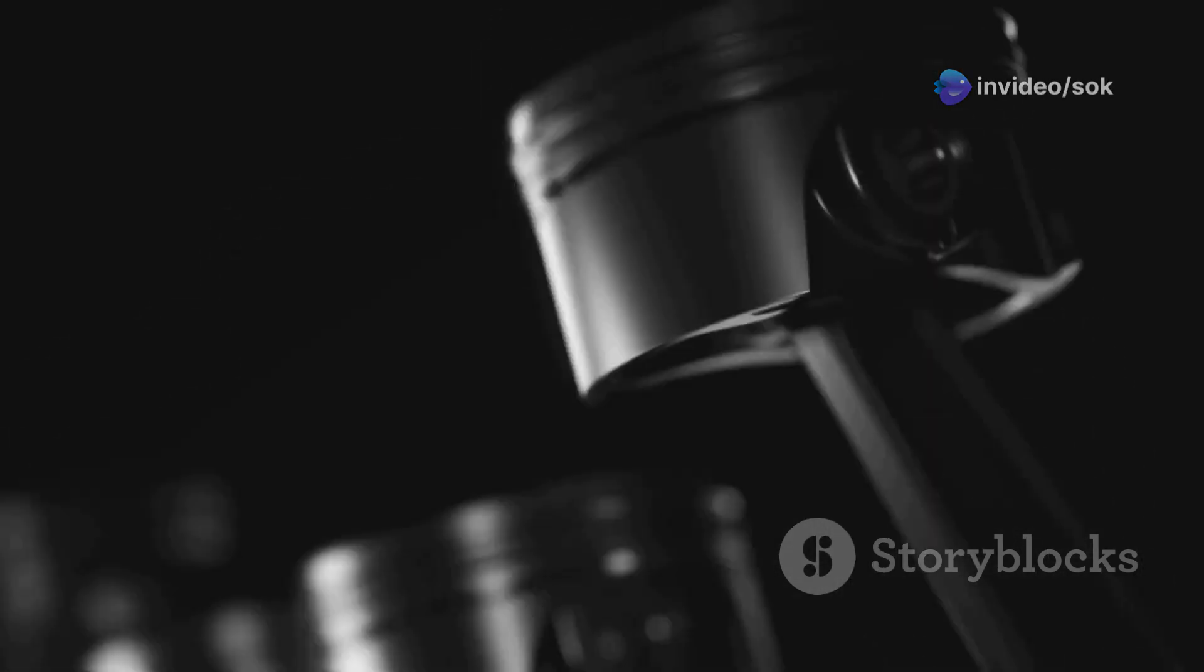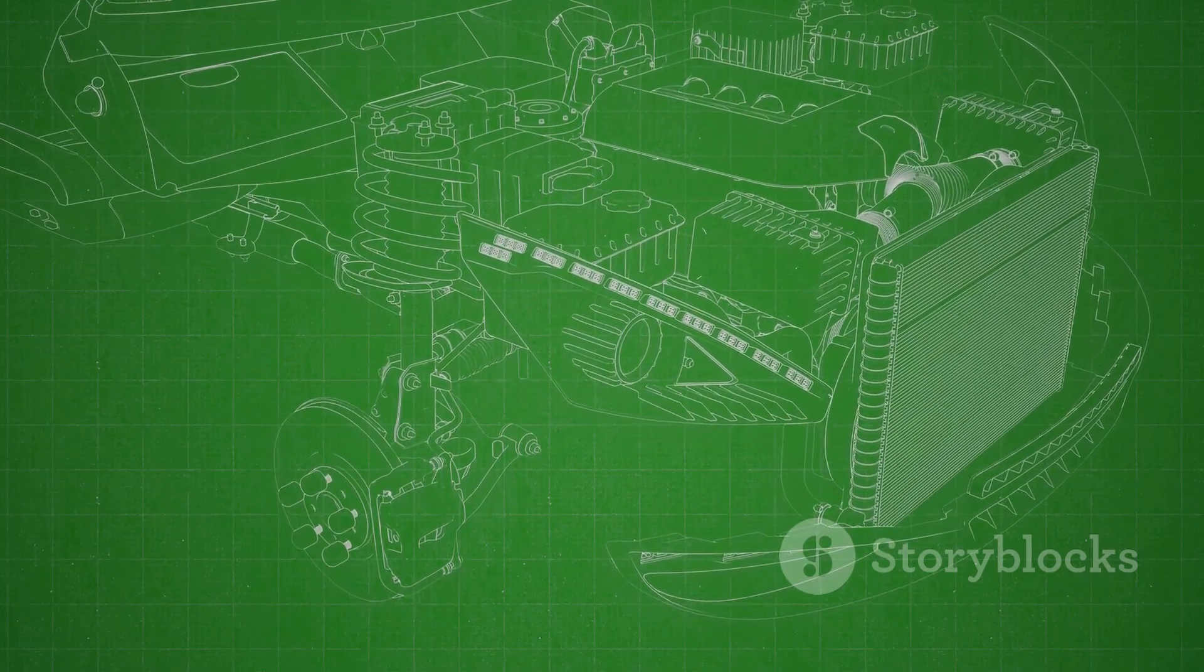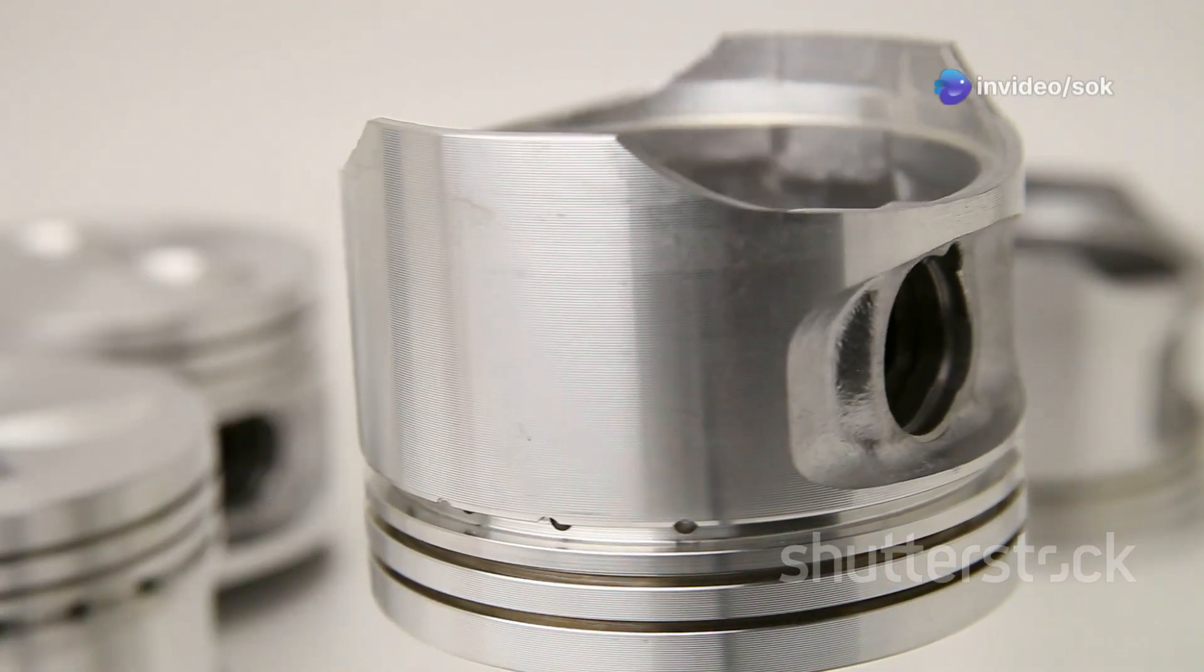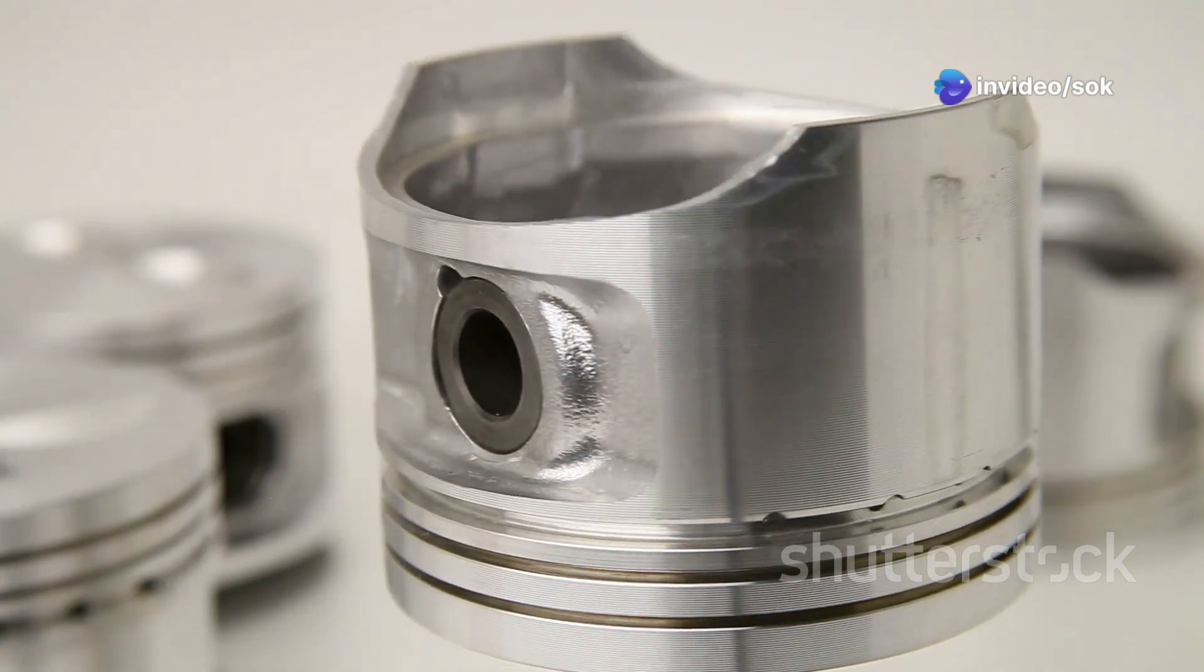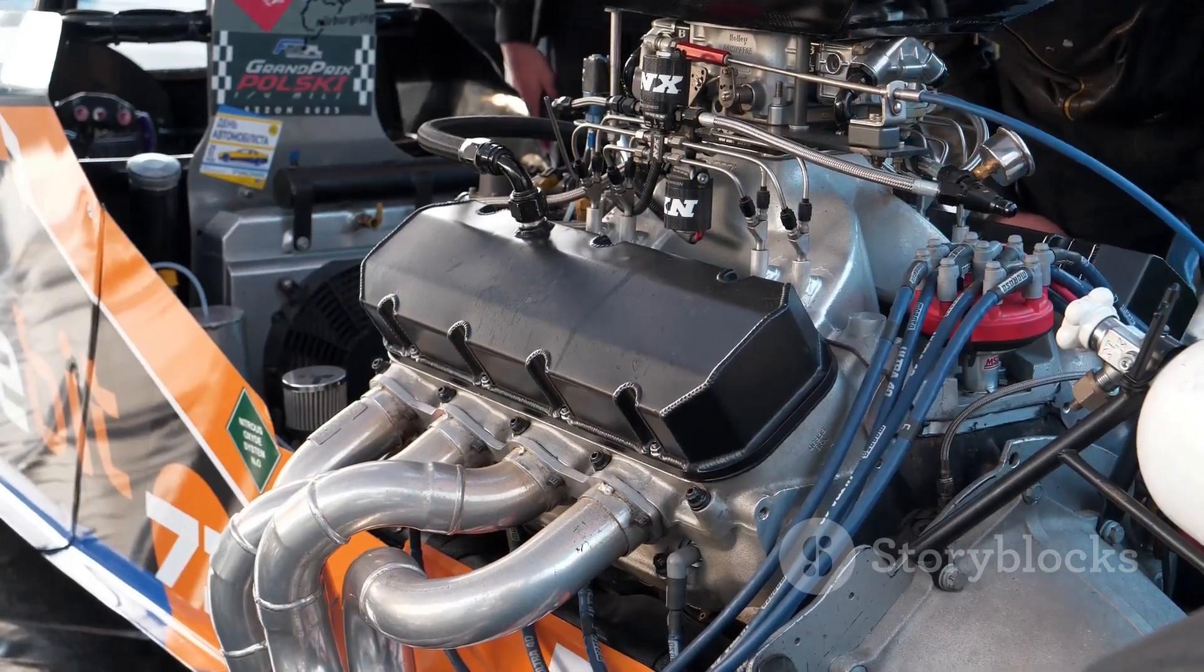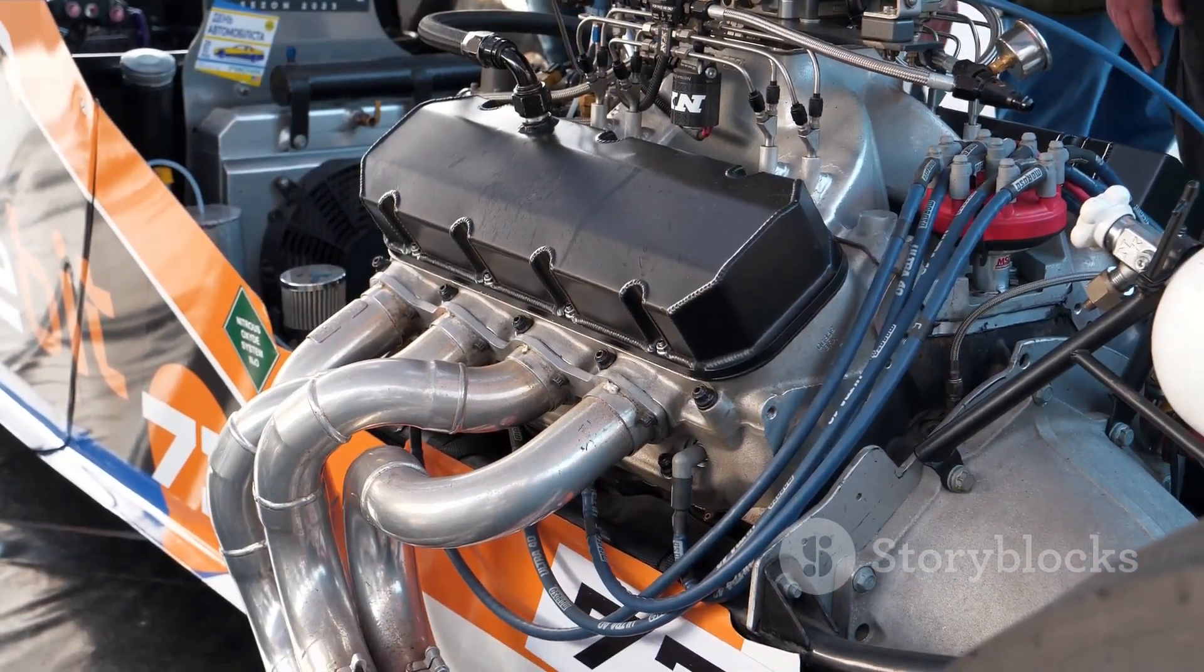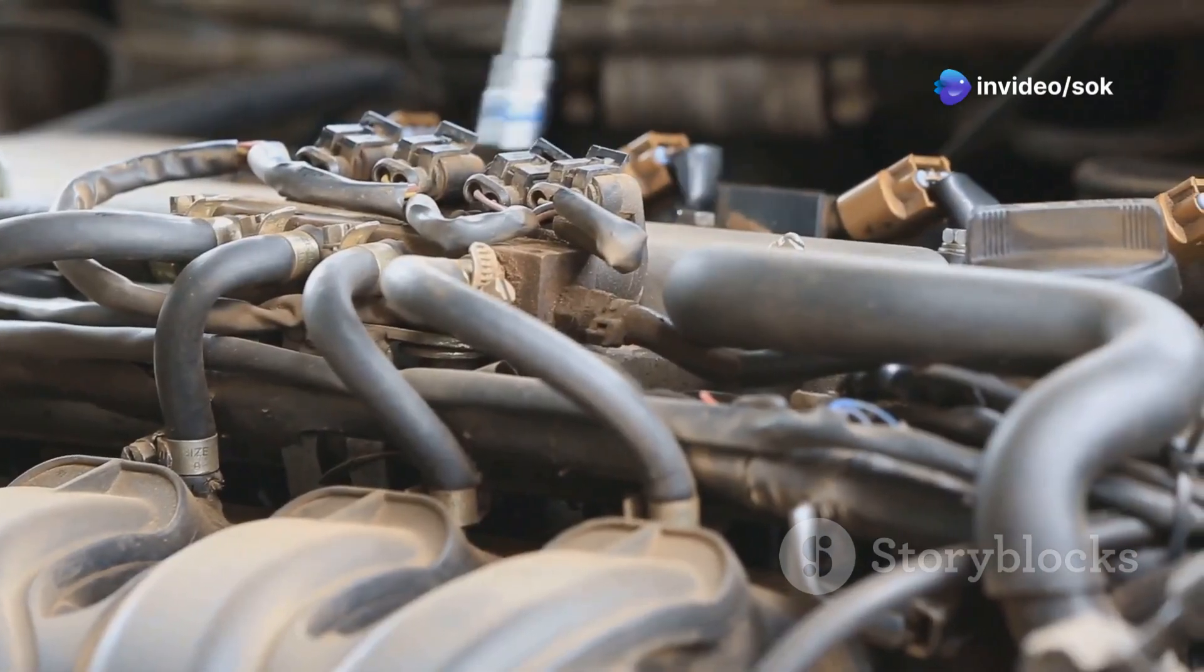Next, the cylinder. This chamber provides the space for the compression to occur. It's the arena where the magic happens. The smoother and more tightly sealed the cylinder walls, the better the compression. This ensures maximum efficiency and power output. Lastly, the valves. During the compression stroke, the intake and exhaust valves remain tightly closed. They play a critical role in maintaining pressure. Think of them as doors sealing the cylinder shut to prevent any leaks. This ensures that no pressure is lost.